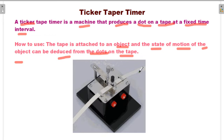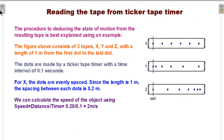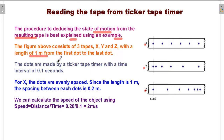Reading the tape from a ticker tape timer: the procedure for deducing the state of motion from the resulting tape is best explained using an example. The figure above consists of three types — X, Y, and Z — each with a length of one meter from first dot to last dot. The dots are made by a ticker tape timer with a time interval of 0.1 seconds.